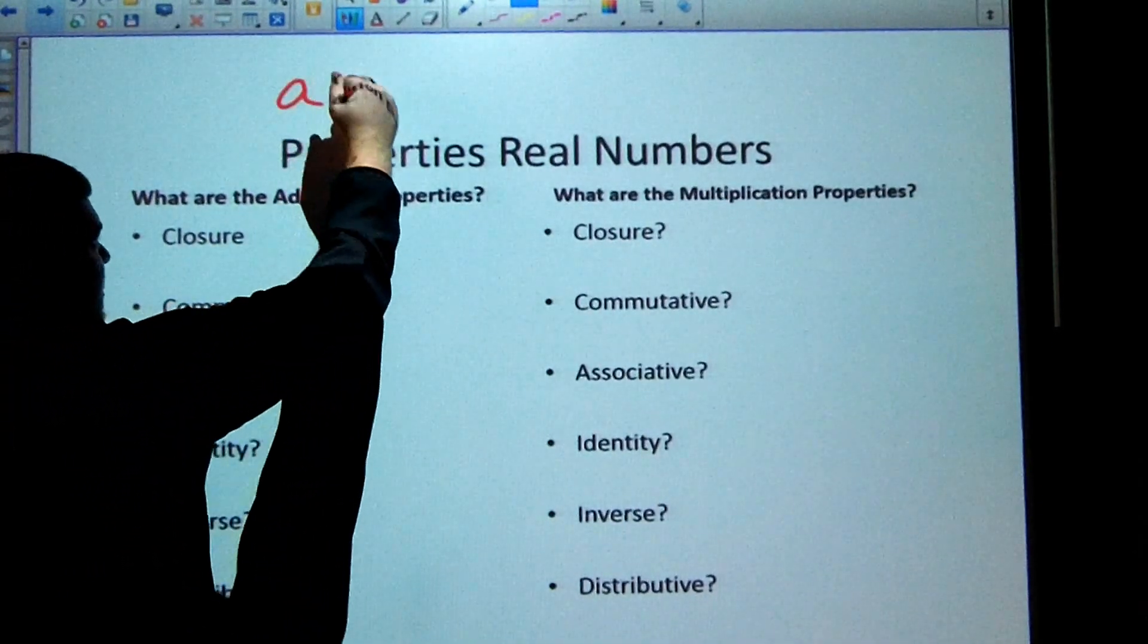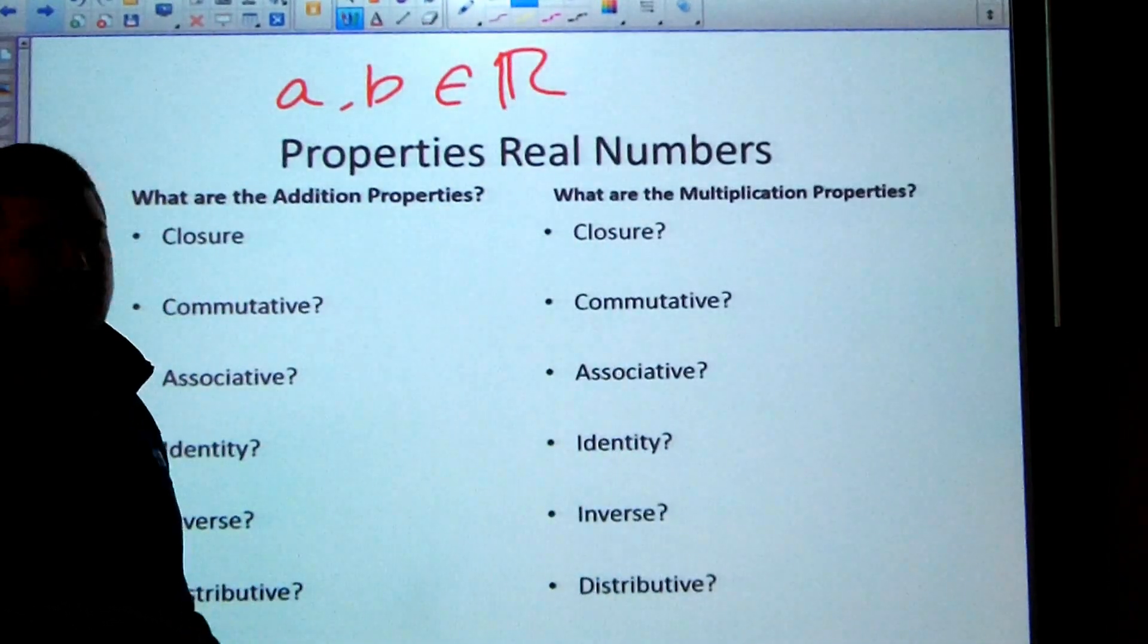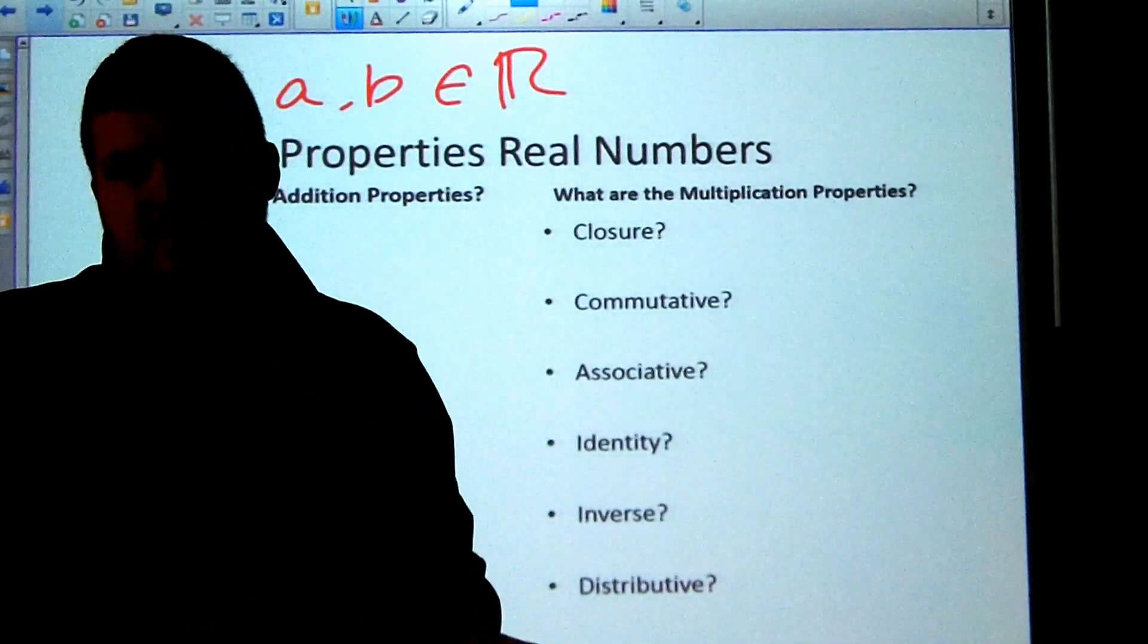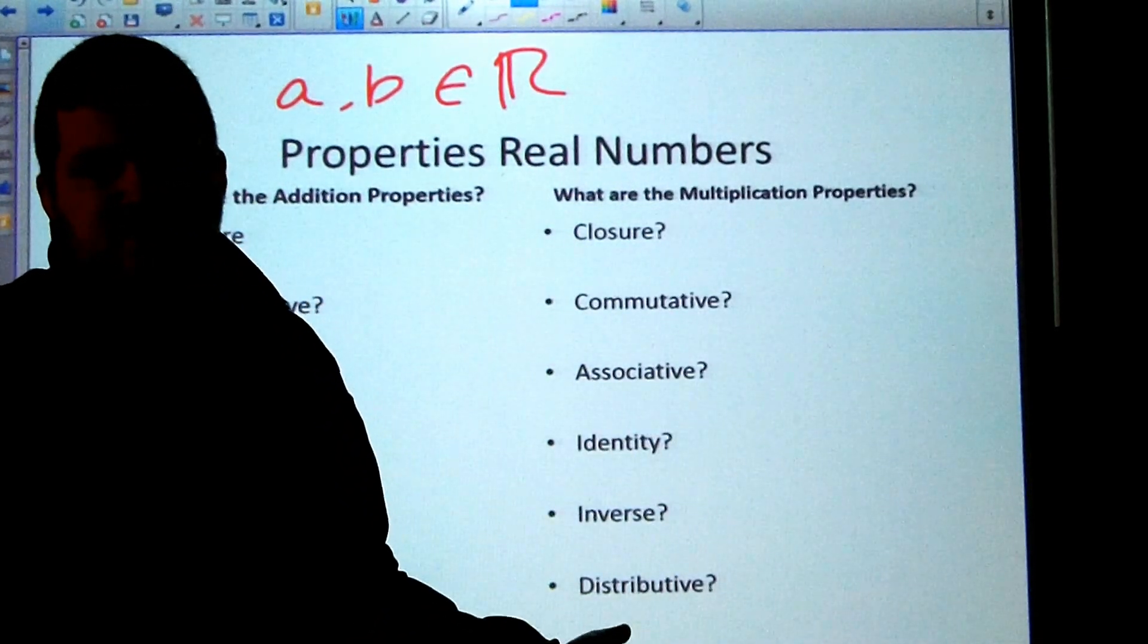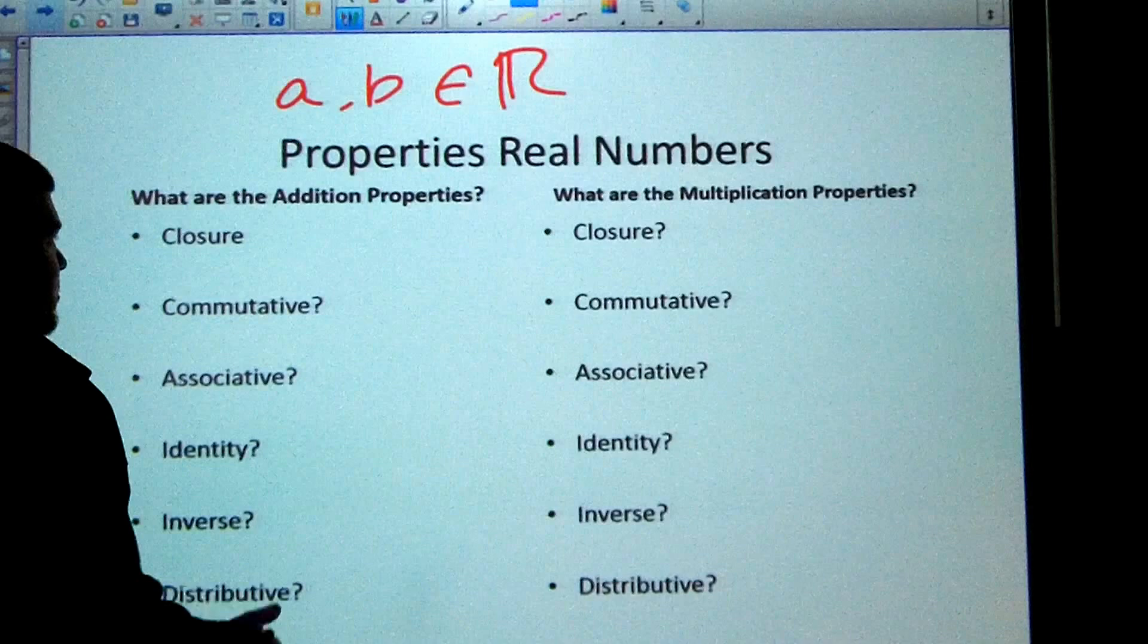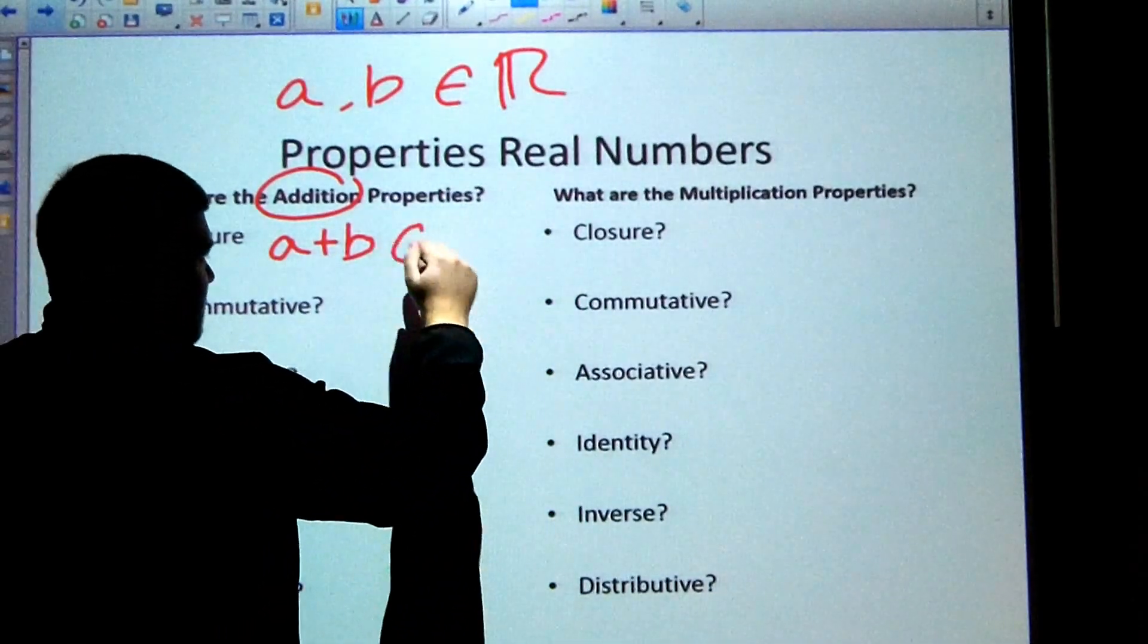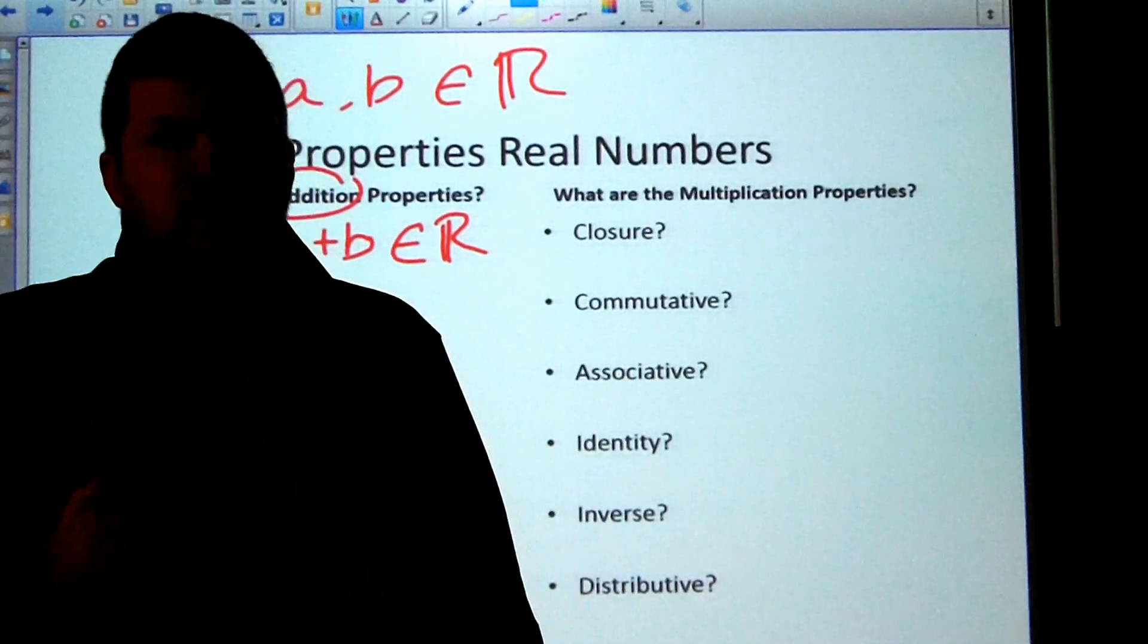So first, the closure property. Here I'm just saying that A and B are both real numbers. So all this means is A is a number, B is a number, and both of those numbers are real numbers. If I have any two numbers, and I'm talking about addition, if I add any two numbers together, well, I still get some kind of real number. For example, one plus two is three. Three is a real number.